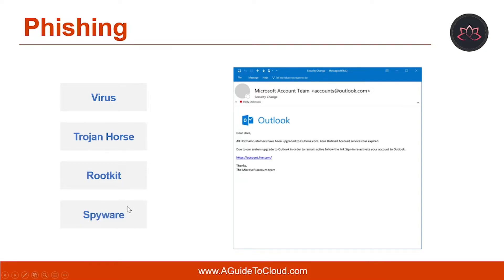Spyware is often used to gather information about internet activities, keystrokes, passwords, and other sensitive data. Spyware can also be used as adware, where the software delivers pop-up ads in addition to tracking user behavior. Phishing emails usually contain branding and URLs that on the surface appear legitimate, and they typically convey a sense of urgency to persuade the user to act quickly.